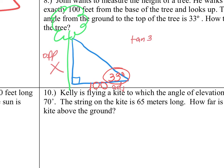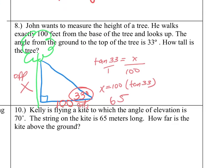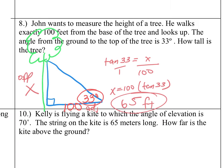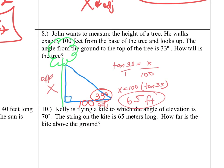Tangent 33 equals opposite over adjacent. Cross multiply: X equals 100 times the tangent of 33. Round your answer to the nearest foot — about 65 feet. You always want to have your unit — whatever it is, meters, feet, yards — for a complete answer, you need to have your units as well.